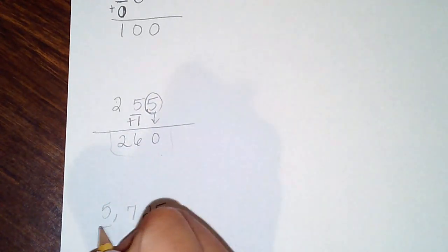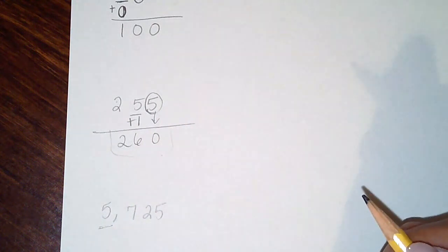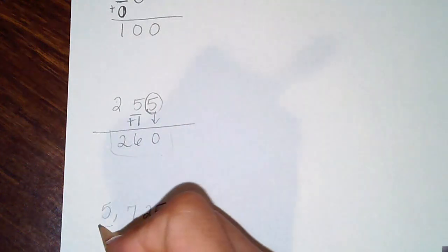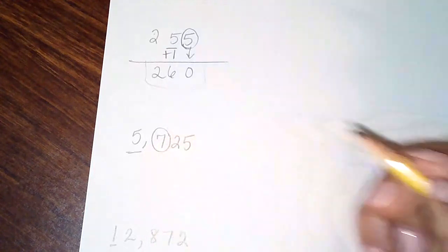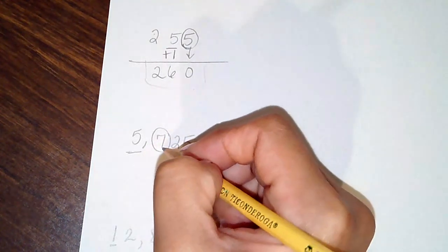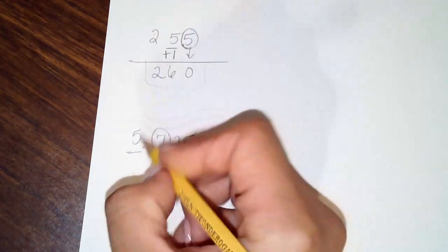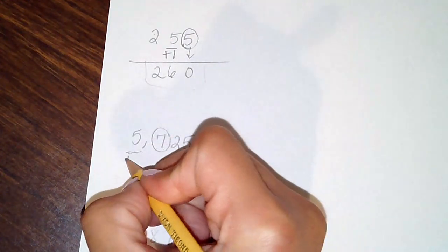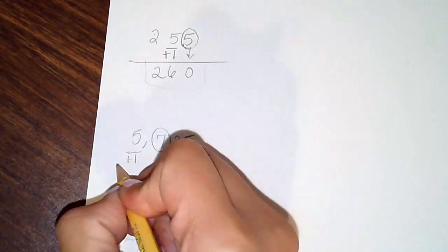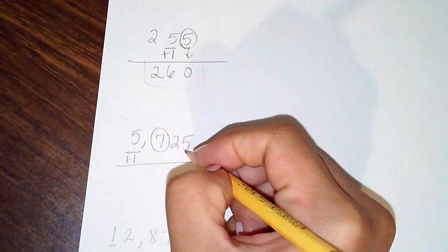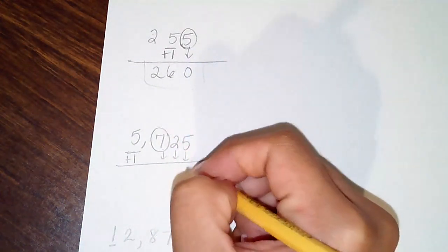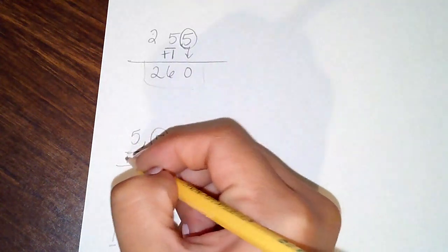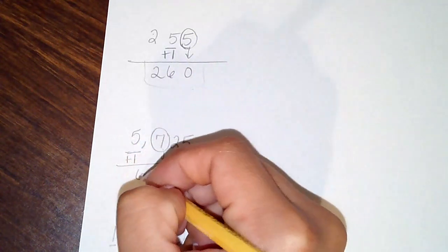Now for the thousands: they want you to round to the nearest thousand, so that's your underlined digit. Seven is your boss, and that is a big boss. So the underlined digit goes up by one — five plus one is six — and all the remaining digits turn into zeros.